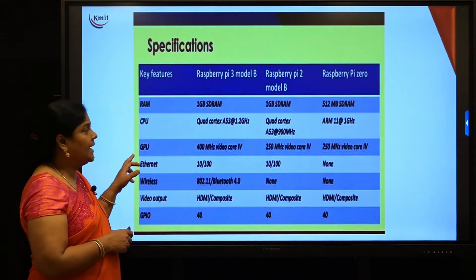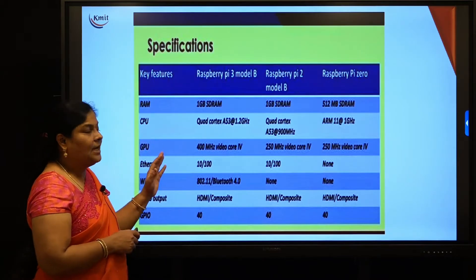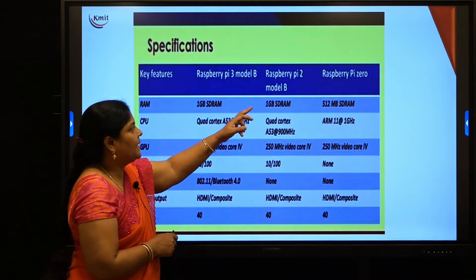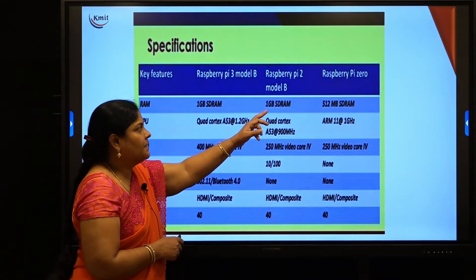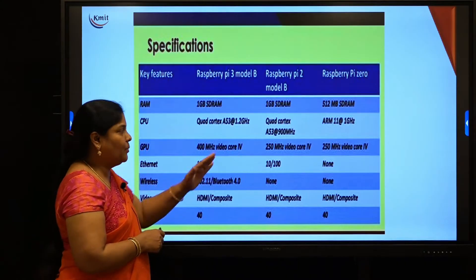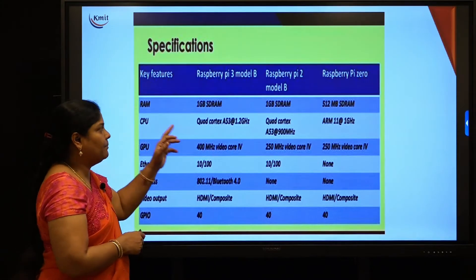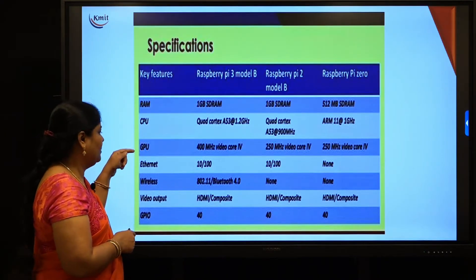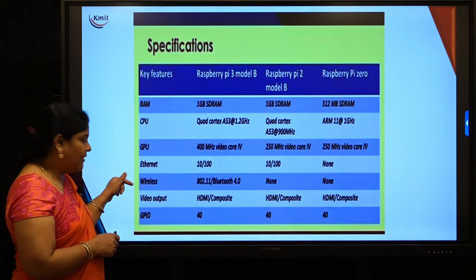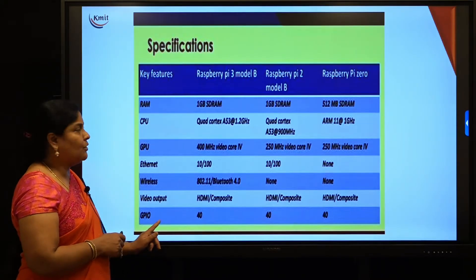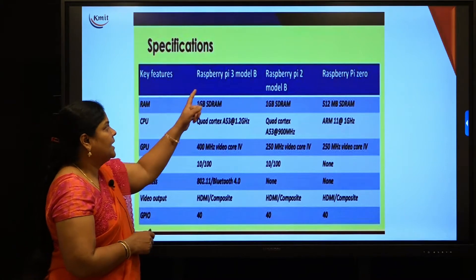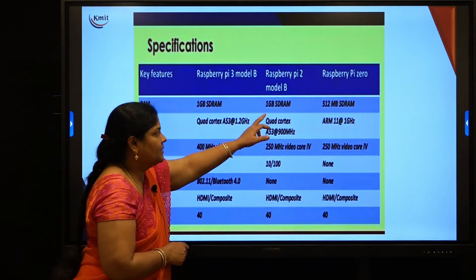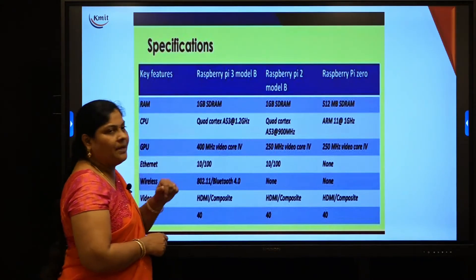This slide represents specifications of different Raspberry Pi boards: Raspberry Pi 3 Model B, Raspberry Pi 2 Model B, and Raspberry Pi 0. The features being compared are RAM, CPU, GPU, Ethernet, wireless connection, video output, and GPIO pins. For RAM, Raspberry Pi 3 has 1 GB SDRAM, Raspberry Pi 2 has 1 GB SDRAM, and Raspberry Pi 0 has 512 MB SDRAM.